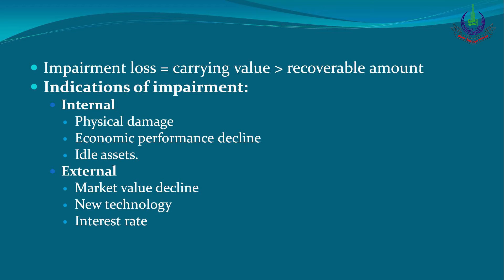Indications of impairment — internal and external — need to be checked. Internal indications: Is the asset physically damaged? Is its economic performance declining? Is the asset idle or unused with no utilization? If these indications exist, we need to proceed with an impairment review. External factors: Is market value declining? Is new technology causing the asset's value to decrease? Are interest rates changing? If these indicators exist, we run the impairment test.